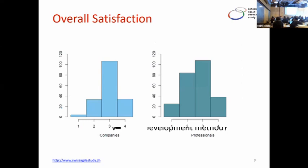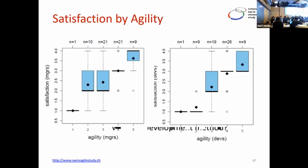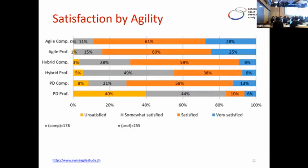In terms of satisfaction, most professionals and companies reported being relatively satisfied with agile. Box plots show similar results — most people are pretty satisfied. Looking further, 40% of plan-driven professionals are unsatisfied with plan-driven approaches — that's quite high. People doing waterfall methods don't like them. But people doing agile methods are well more satisfied — around 60% satisfied or very satisfied. So the key takeaway is: you should adopt agile practices in your organization.